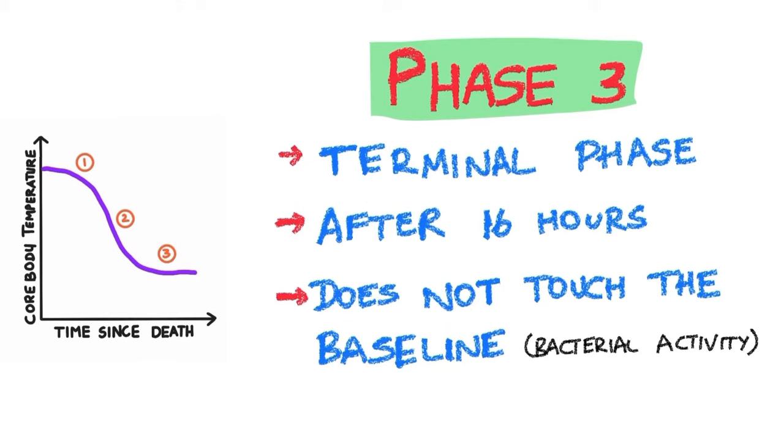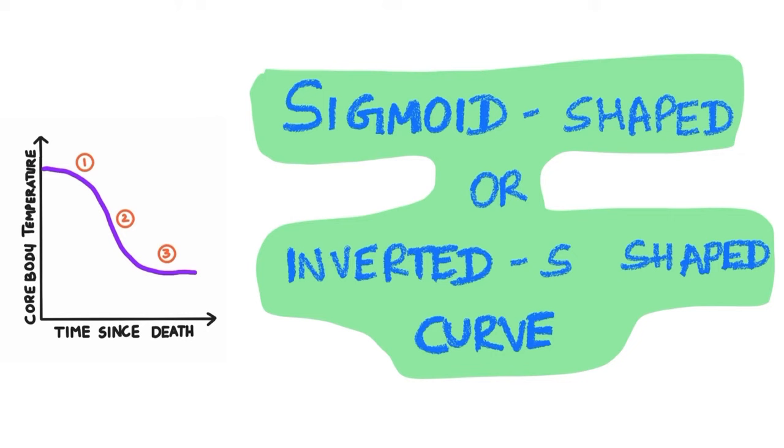This curve is sigmoid-shaped or inverted S-shaped because of these three phases.